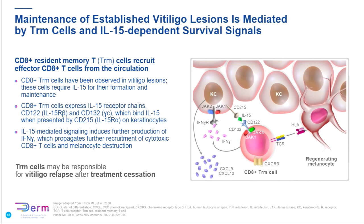Even in non-segmental vitiligo of long-standing duration, you can achieve good repigmentation with tacrolimus or phototherapy, but again patients can show loss of pigmentation or even new patches. This is because there is persistence of cell memory — CD8-positive T-RM cells — and interleukin-15 and CD122 receptors are making them survive in the skin. John Harris is working on blocking this pathway, either interleukin-15 or CD122, in the hope that it could lead to lifelong stability. This is what makes this an exciting phase.